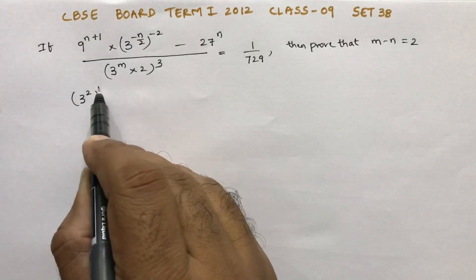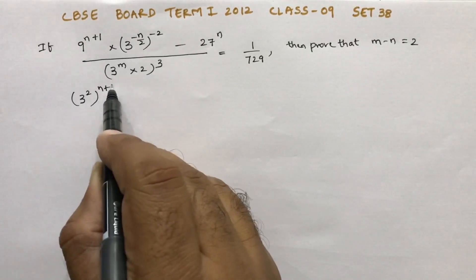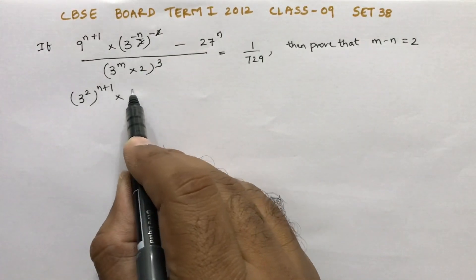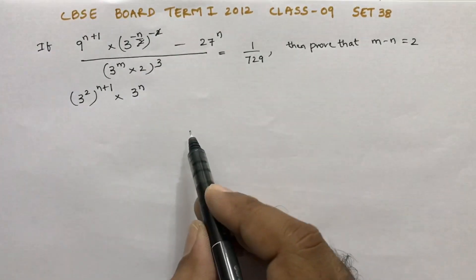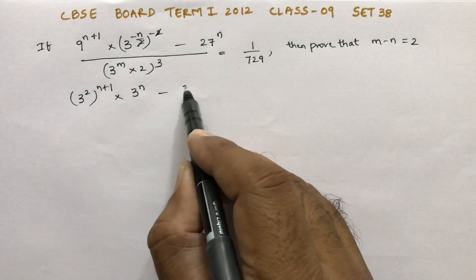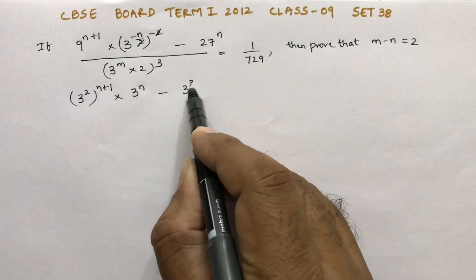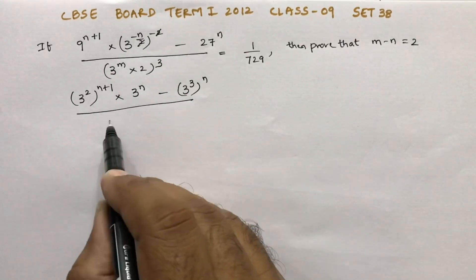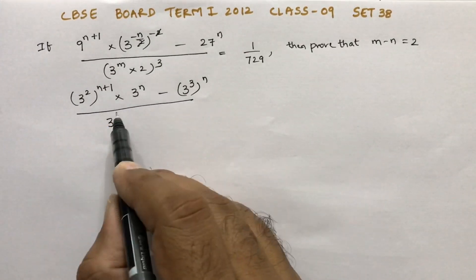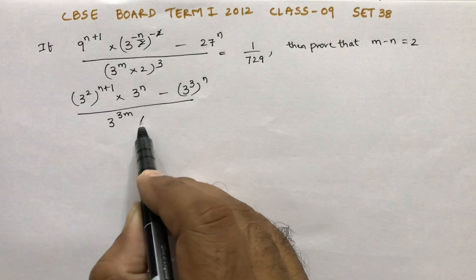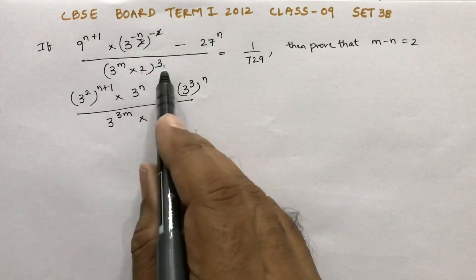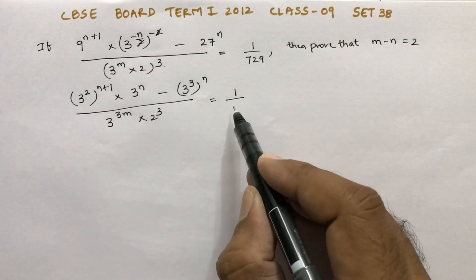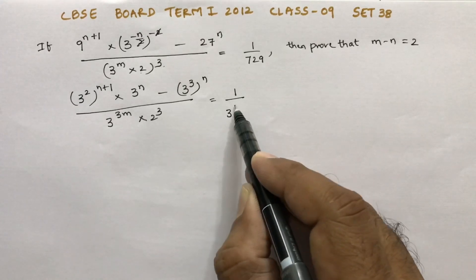Whole power n plus 1, here 2 and 2 cancel, minus into minus gives plus, so 3 power n. And 27 can be written as 3 power 3, whole power n. By 3 power m into 3, that is 3m, into 2 power 3 equals 1 by 729, and 729 is 3 power 6.